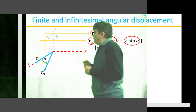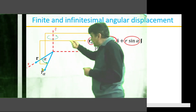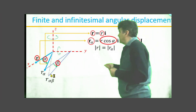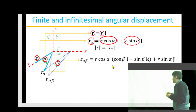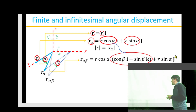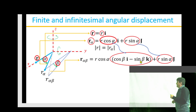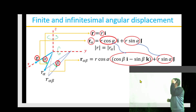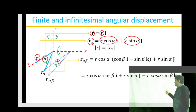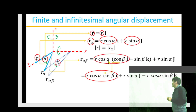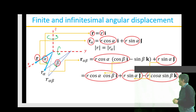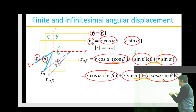Now if I rotate r_alpha about the y-axis through a finite angular displacement beta, I get vector r_{alpha,beta}. Since r_alpha is rotated about the y-axis, the component along y — which is r·sin(alpha) — will not change, while the component along x splits into two components: one along x and one along z. The x component combines the factors with cos(beta), the y component remains r·sin(alpha)·j, and the z component is r·cos(alpha)·sin(beta)·k.